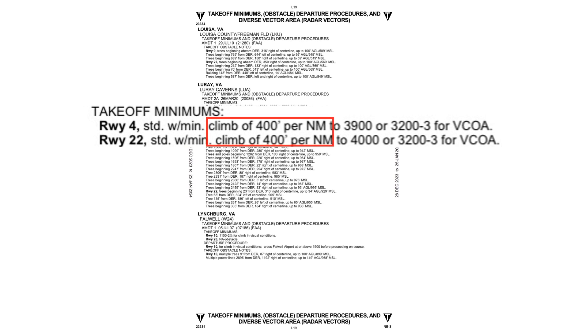Here in Luray, Virginia, we need to maintain a minimum climb gradient of 400 feet per nautical mile. Climb gradients use, as units of measurement, altitude gains per distance traveled — feet per nautical mile.